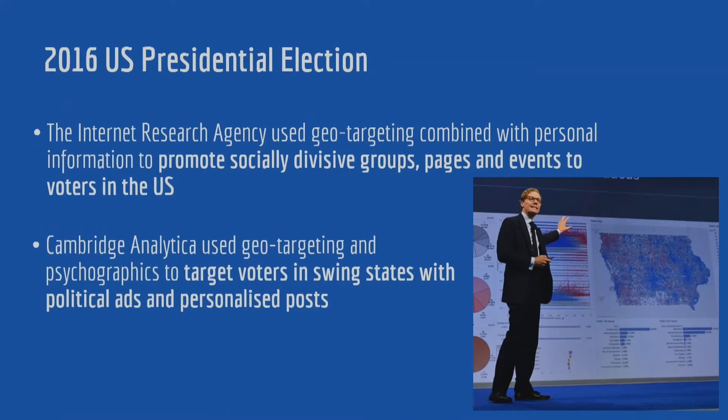Geo-targeting caused controversy in the wake of the 2016 US presidential election when it was discovered that the Internet Research Agency, a Russian company engaged in online influence campaigns, combined personal information with geo-targeting in order to promote socially divisive groups, pages and events to voters in the US. Similarly, Cambridge Analytica coupled their psychographics with geo-targeting in order to target voters in swing states with political ads and personalized posts.